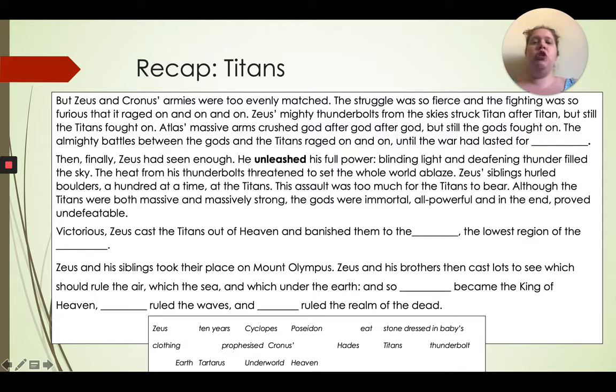Zeus and Cronus's armies were too evenly matched. The struggle was so fierce and the fighting so furious they raged on and on. Zeus's mighty thunderbolts from the sky struck titan after titan, but still the titans fought on. The almighty battles between the gods and the titans raged on and on until the war had lasted for [ten years]. Then finally Zeus had seen enough. He unleashed his full power. Blinding light and deafening thunder filled the sky.